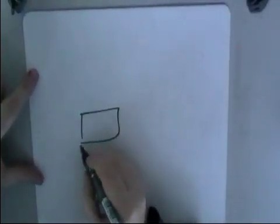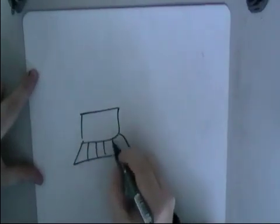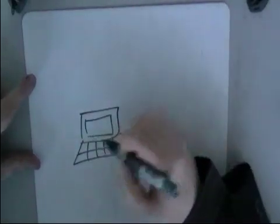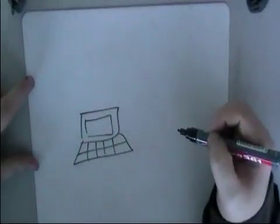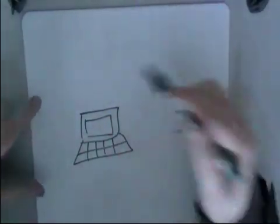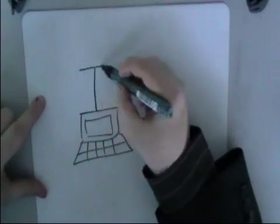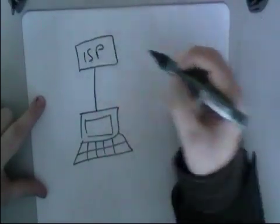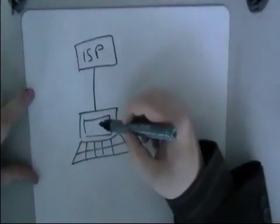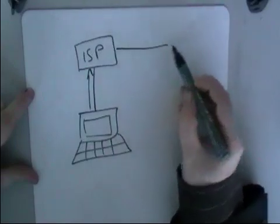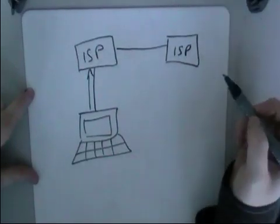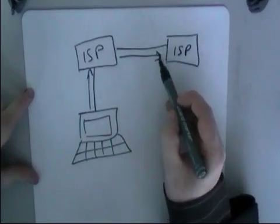I've got a computer. There's my computer. And what I want to do is I want to load a web page. So what I do is I send a request requesting this web page to be displayed. I send that via my internet service provider — that might be BT, it might be Virgin, TalkTalk, Orange, whoever. So that request goes via my ISP. It then goes to the ISP of whoever is hosting the website. In my case, I'm trying to access a school website.